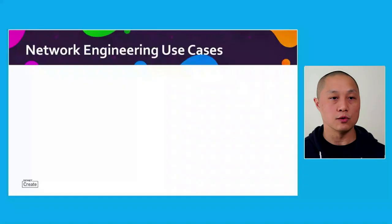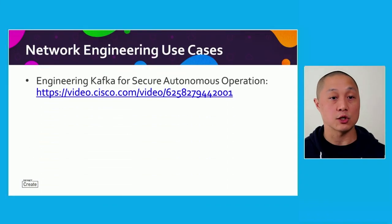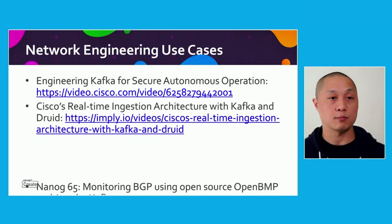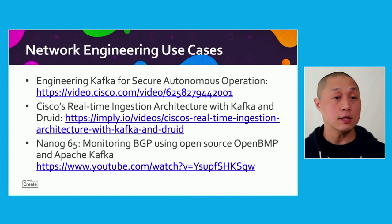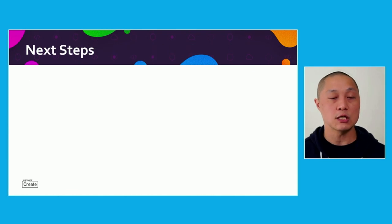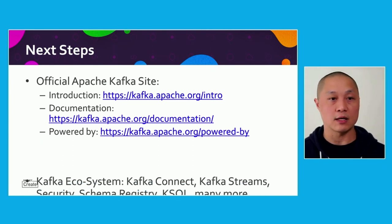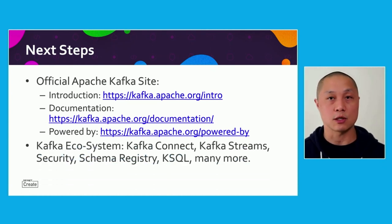Here are more network engineering use cases: secure autonomous operations, Cisco's real-time ingestion, and NANOG. If you're interested in learning more about Kafka, check out the links for documentation as well as the vast Kafka ecosystem, including Kafka Connect, Kafka Streams, and KSQL. Thank you for spending 20 minutes with me, and I'm excited to see what you can use Kafka for in your applications.